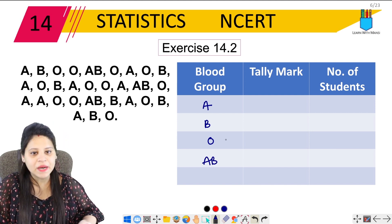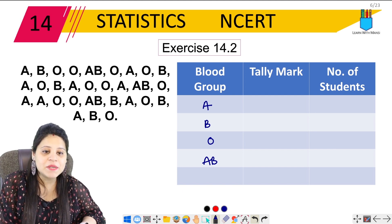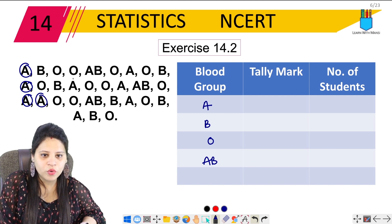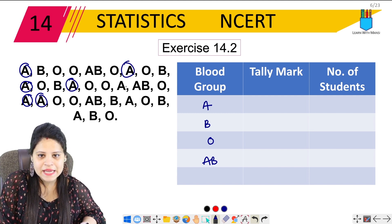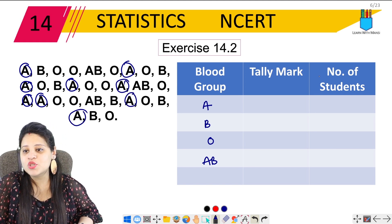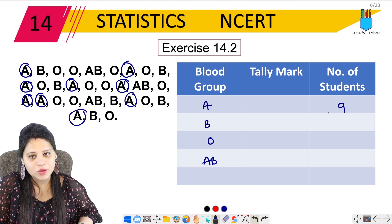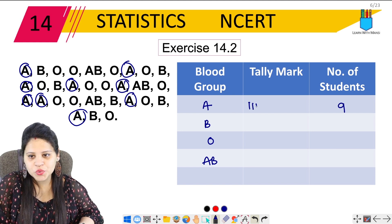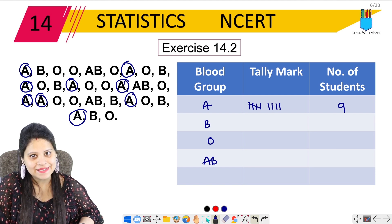Let's count blood group A. We get 1, 2, 3, 4, 5, 6, 7, 8, 9 — so 9 of the children have blood group A. We write the tally marks: 1, 2, 3, 4, 5, 6, 7, 8, 9, and the number of students is 9.